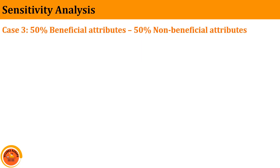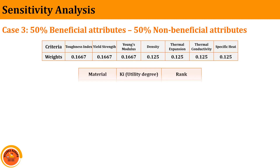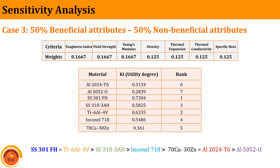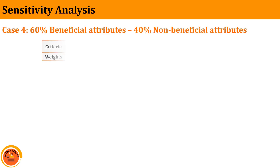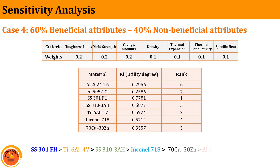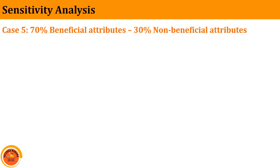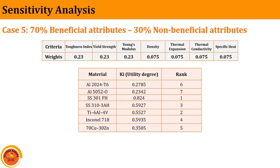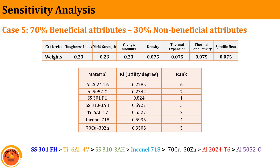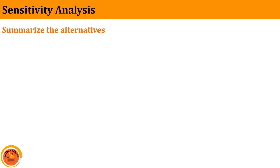For case three — 50% beneficial and 50% non-beneficial attributes — the weights are distributed accordingly, and again the best alternative is SS301FH. In case four — 60% beneficial and 40% non-beneficial — the third alternative, SS301FH, is again the best. In case five — 70% beneficial and 30% non-beneficial — as shown in the Excel sheet with the corresponding weights, the third material again ranks as the best.